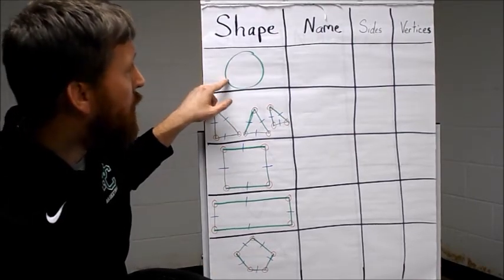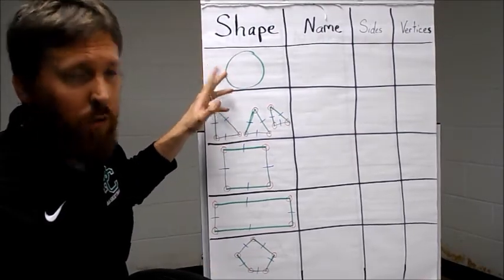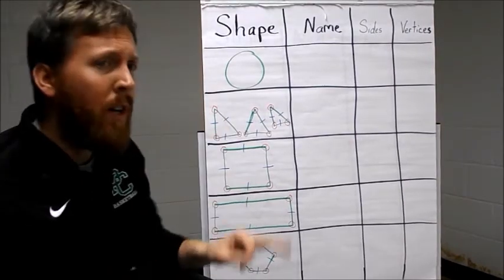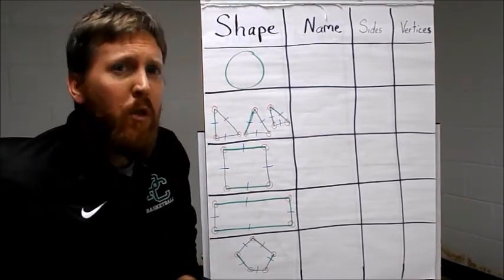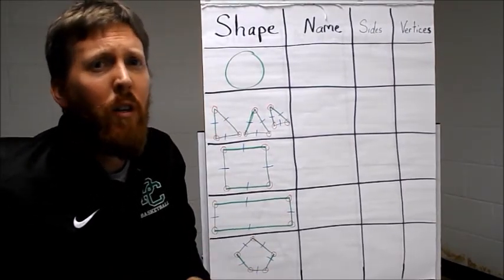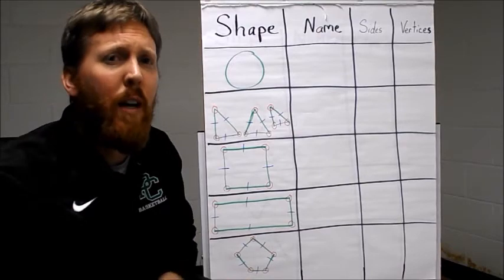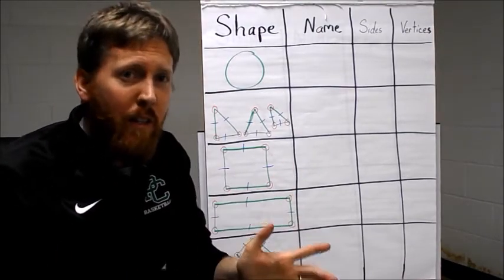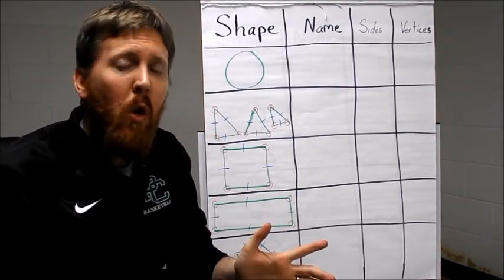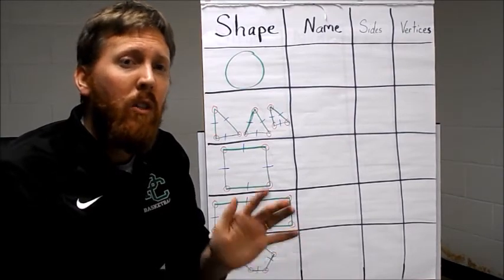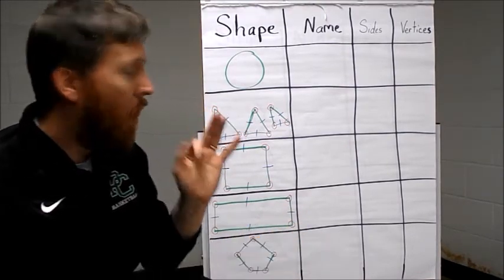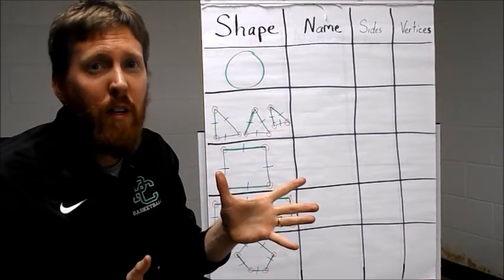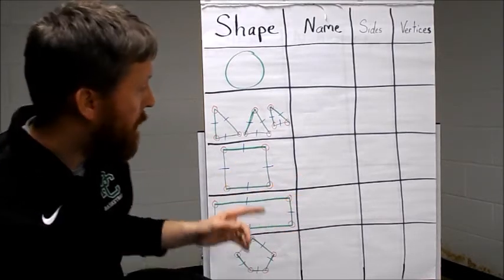The first shape we have is a circle. Then I drew some triangles — you can have three different types: an equilateral triangle, a right triangle, or an isosceles triangle. That doesn't mean a whole lot to us in second grade; just know that all three types are still classified as a triangle in our classroom.